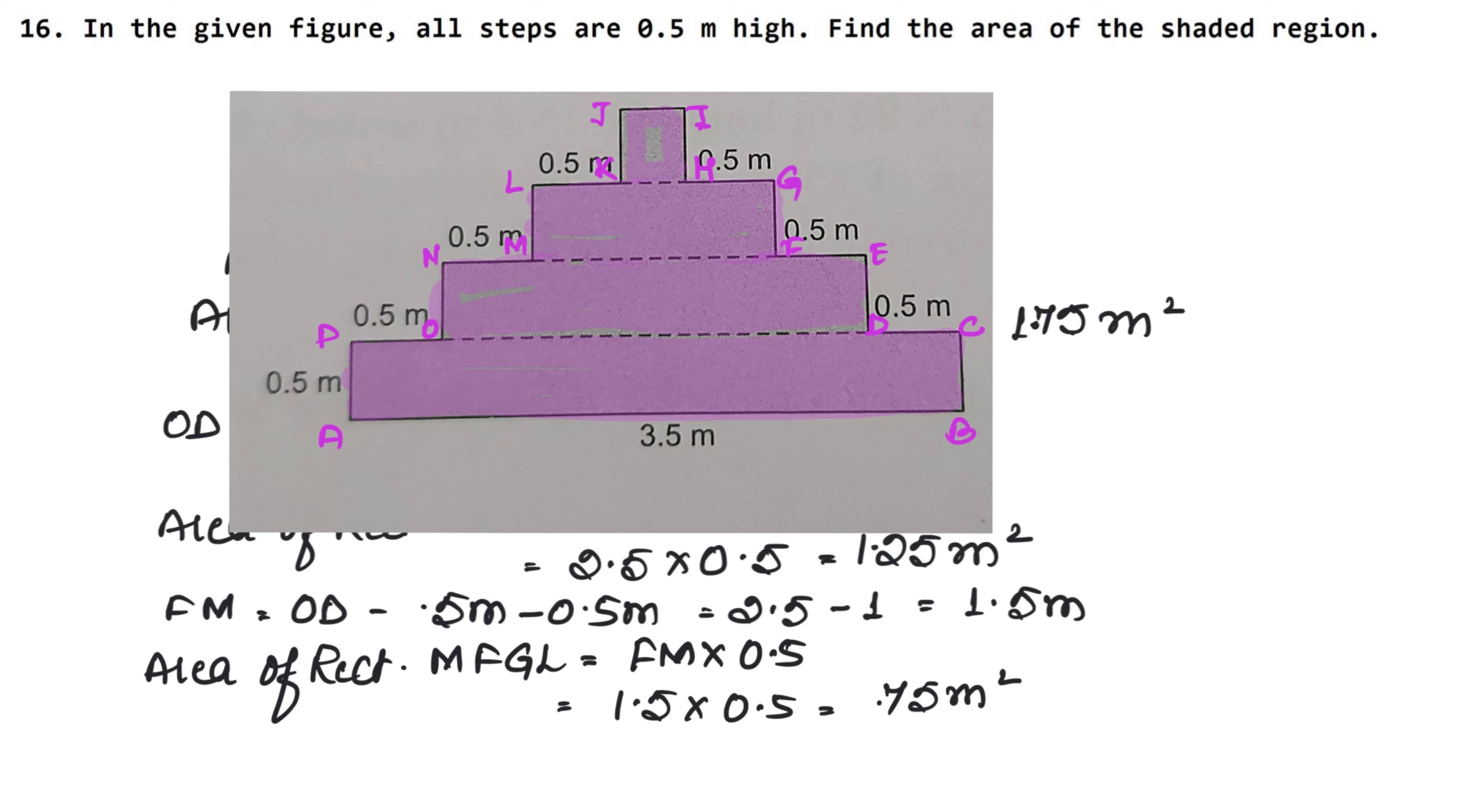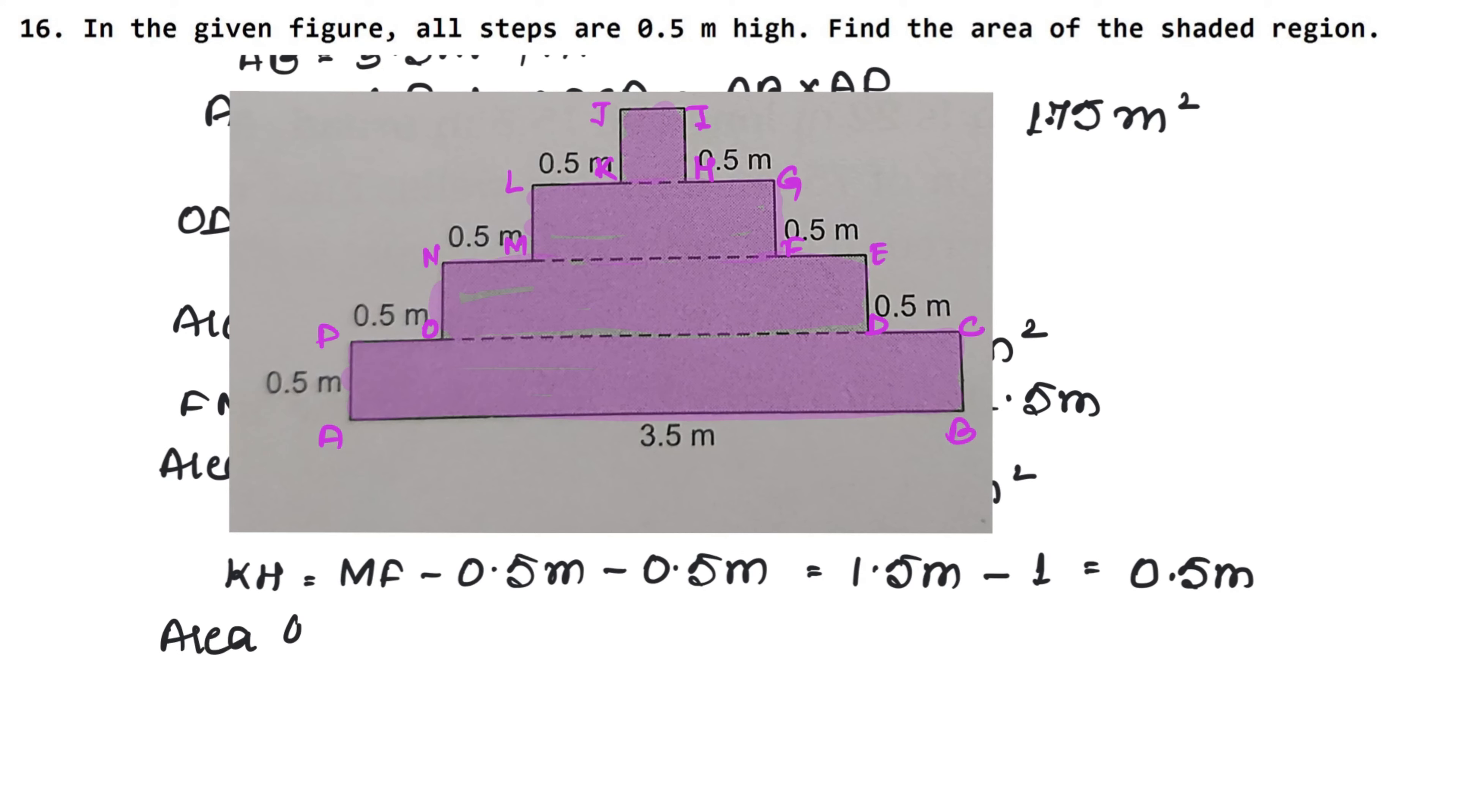Now, we will take the last area of this ladder. Look, as much as MF is, it will be 0.5, 0.5 minus. So the length of KH will come. We will take MF to 0.5 meter minus. So the MF or FM is how much? 1.5 meter. And from that, 0.5, 0.5 means 1, 1 minus. So this is 0.5 meter, our KH length. Now, we will take the area. Area of KHIJ. How much? KH into 0.5 meter. So KH was 0.5 meter, and we will multiply 0.5 times 0.5 meter. So this is 0.25 meter square.